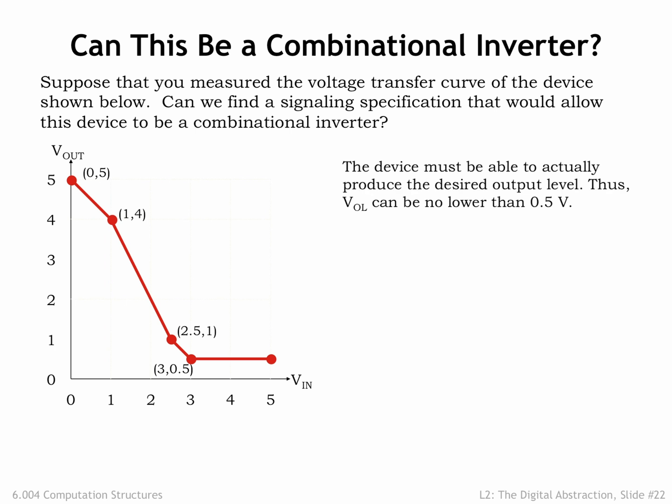The lowest output voltage produced by the device is 0.5V, so if the device is to produce a legal digital output of 0, we have to choose VOL to be at least 0.5V.